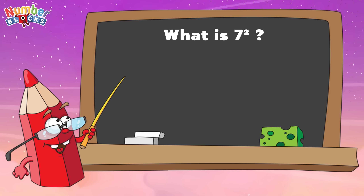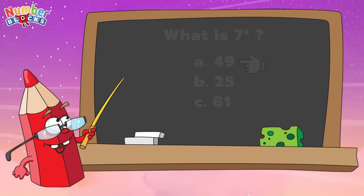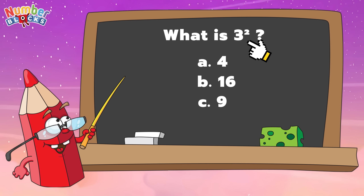What is 7 squared? Is it letter A, 49, B, 25, or letter C, 81? And the right answer is letter A, 49. 7 squared is equals to 49. Now, what is 3 squared? Is it letter A, letter B, 16, or letter C, 9? And the correct answer is letter C, 9. 3 squared is equals to 9.